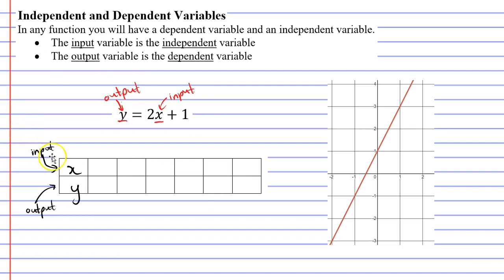Anyway, once we label our table, we start by picking some input values or some x values. And we might write something down such as negative 1, 0, 1, 2, 3, and 4. We can basically pick whichever number we want. We pick them independently. Hence, why the input variables are referred to as the independent variables.